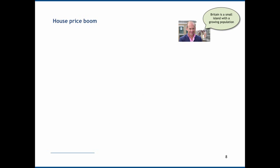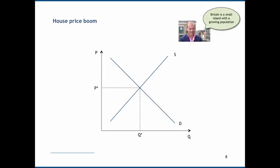Let's now go back to Phil Spencer. Britain is a small island with a growing population, and let's analyze that using comparative statics. So here's our supply demand diagram. The first thing to point out when he mentions that Britain is a small island is that he's making a comment about the supply capacity.